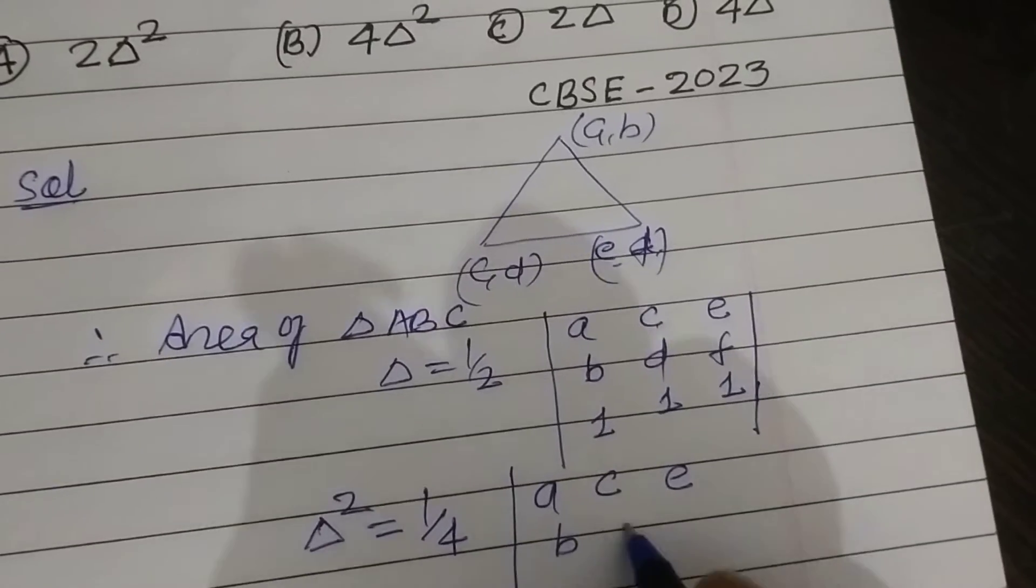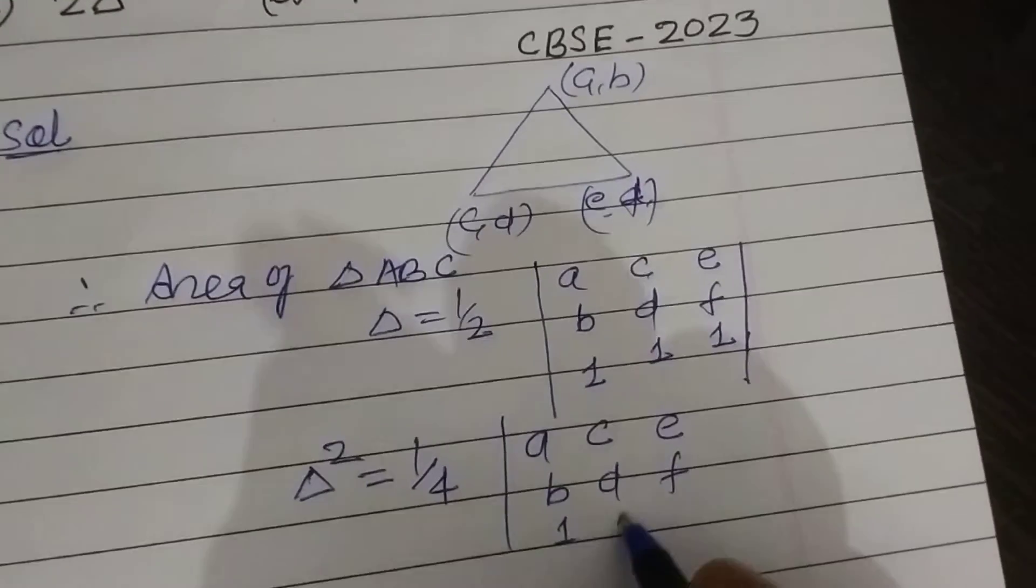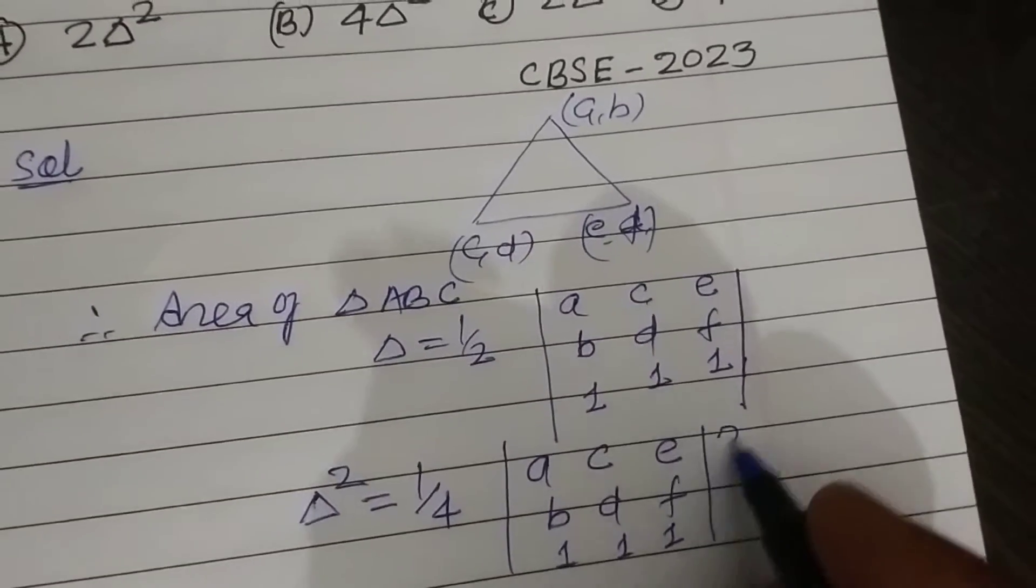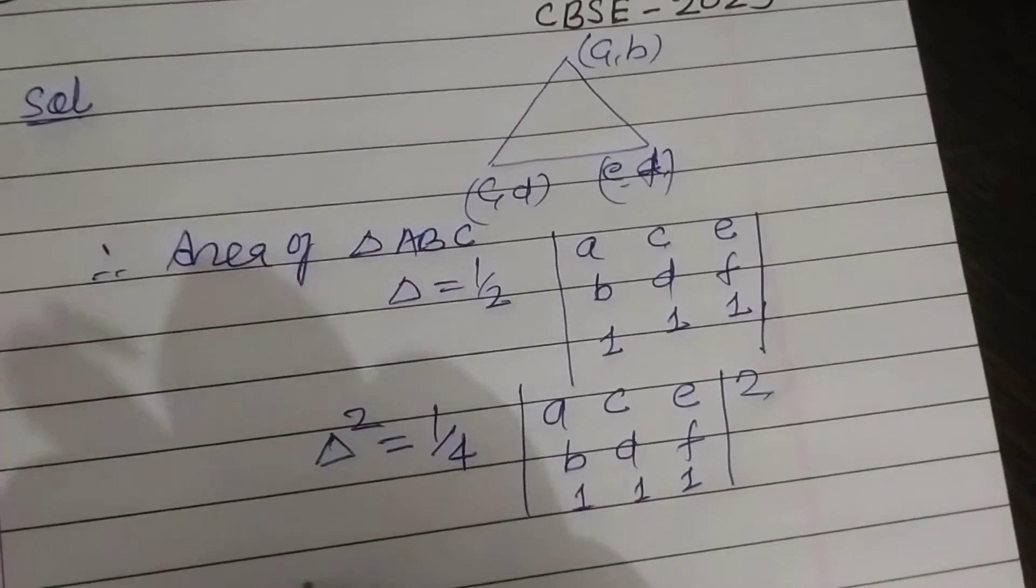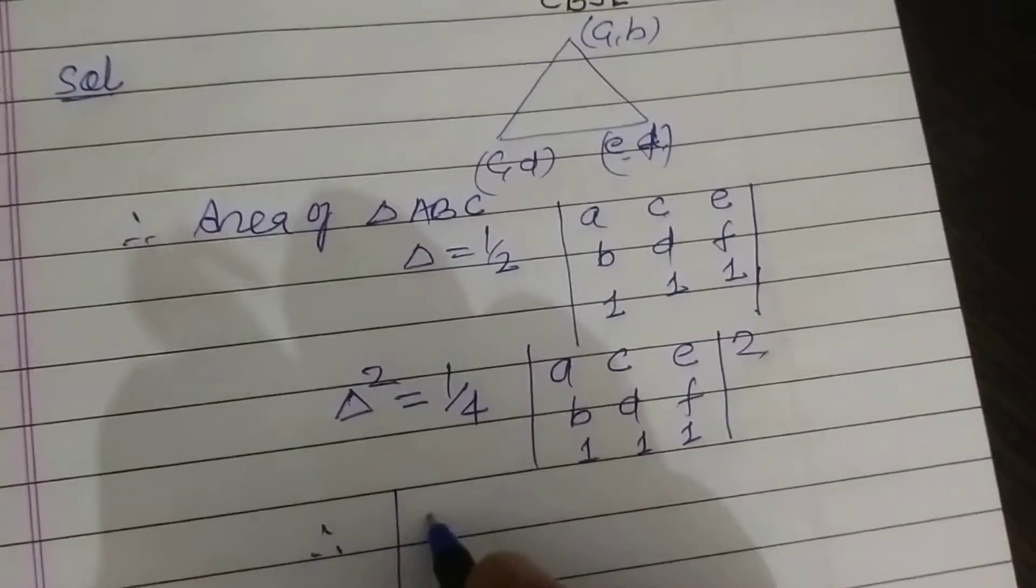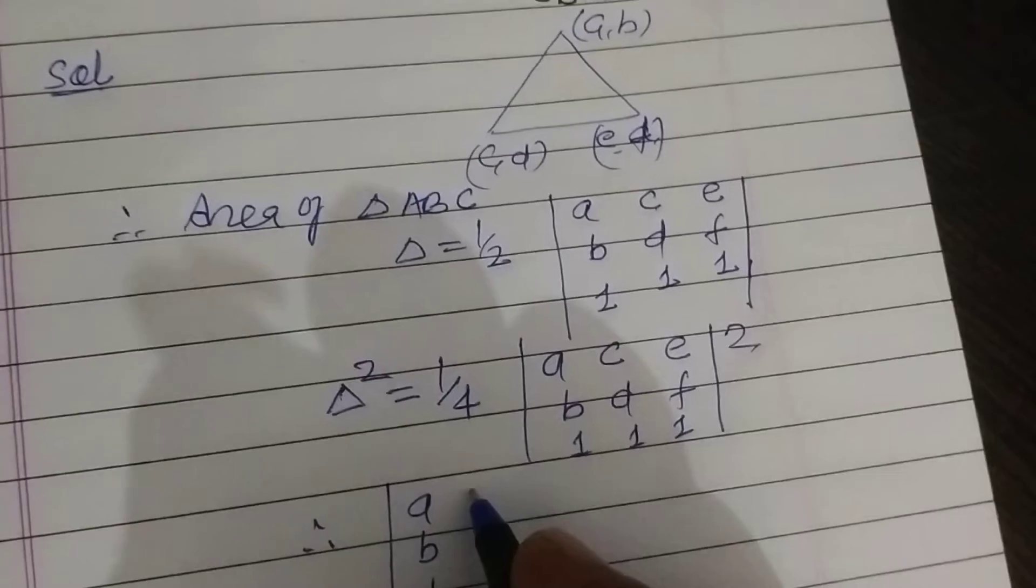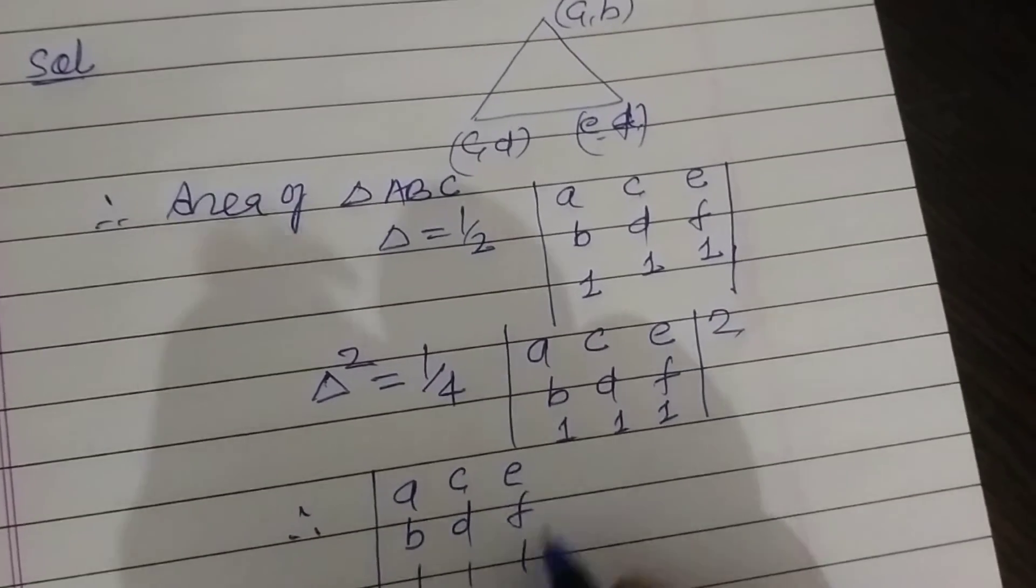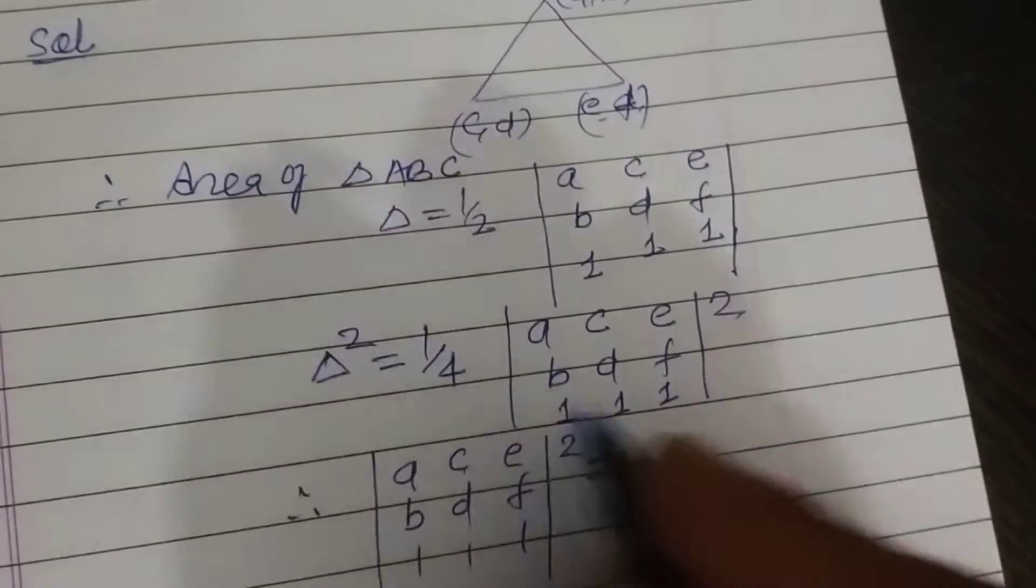Therefore, the value of |a b 1; c d 1; e f 1| whole square equals 4 times delta squared.